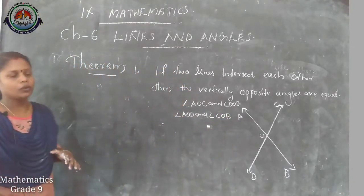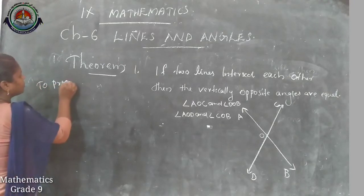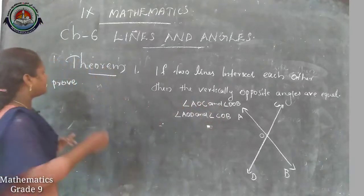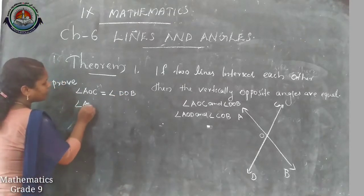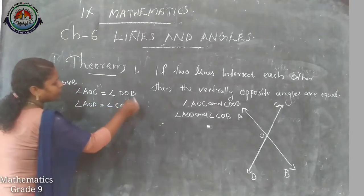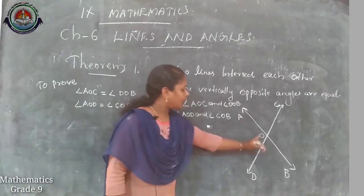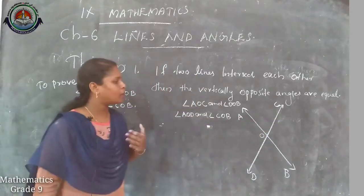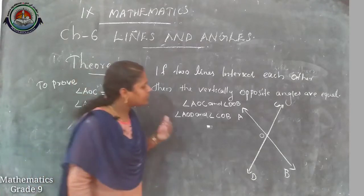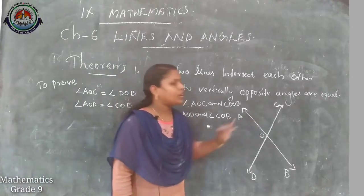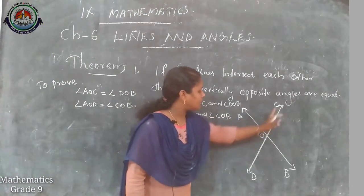We need to prove angle AOC equals angle DOB, and angle AOD equals angle COB. Consider angles AOD and AOC — they are linear pairs on line COD, so angle AOD plus angle AOC equals 180 degrees. Similarly, angles AOC and COB are linear pairs on line AOB, so angle AOC plus angle COB equals 180 degrees. We take these as equations 1 and 2.